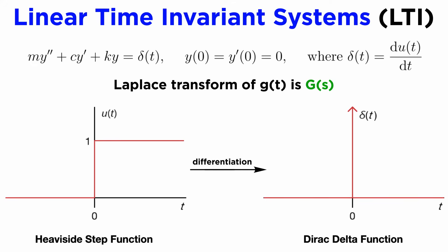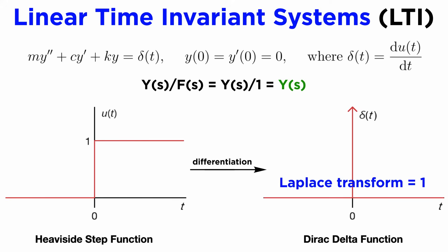To connect this back to Laplace transforms, we can note that the impulse response g(t) has a Laplace transform given by the transfer function of our system, capital G(s). This is because the Laplace transform of a Dirac delta function is simply one, so Y(s) over F(s) simplifies to the transformed solution, Y(s) only.